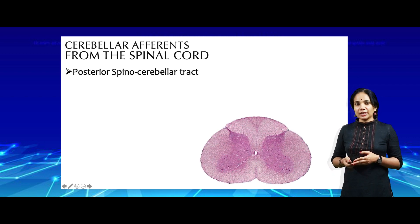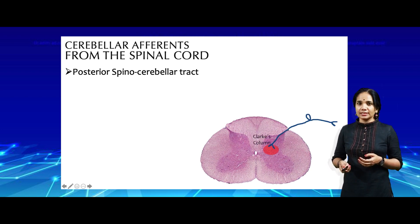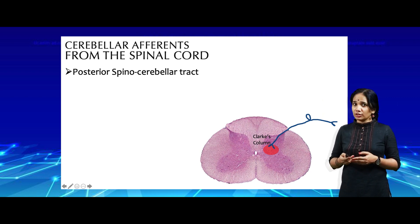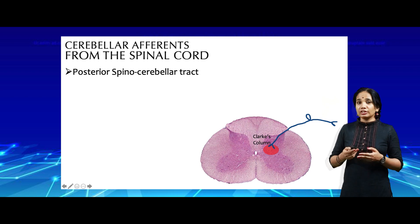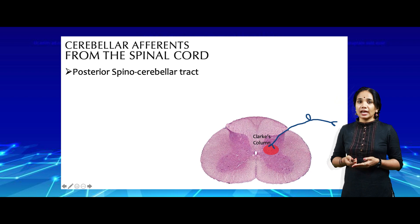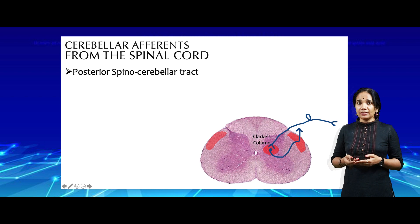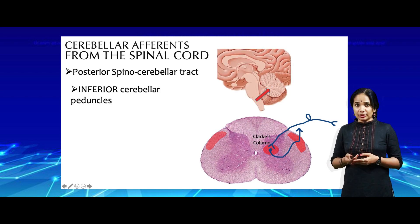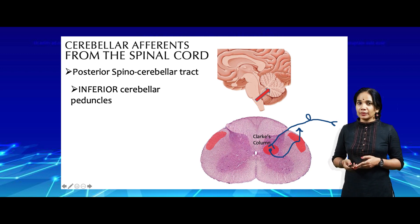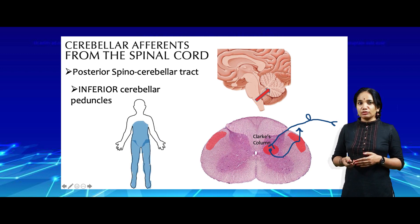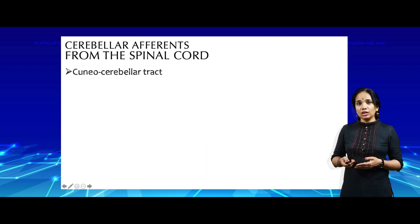The posterior spino-cerebellar tract is very similar to the anterior spino-cerebellar tract. It is also formed by central processes of pseudo-unipolar neurons in the dorsal root ganglion and also relays in Clark's column. However, the fibers starting from Clark's column do not cross over; they go to the posterior spino-cerebellar tract of the same side, ascend to the brain stem, and enter the cerebellum via the inferior cerebellar peduncle. These provide information from the lower part of the trunk as well as the lower limbs.